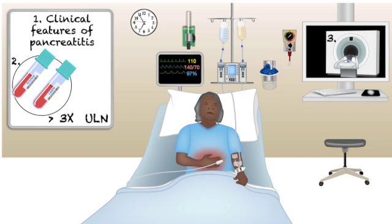Before labs are back and before the CT is done, the moment a patient arrives, assess their volume status. These patients are almost always significantly volume down — they lose a ton of fluid into the retroperitoneum, what we call third spacing, like an internal burn. Priority one is pain control, but right alongside that, start IV fluids immediately and aggressively. This early fluid resuscitation is critical and can prevent things from getting much worse.